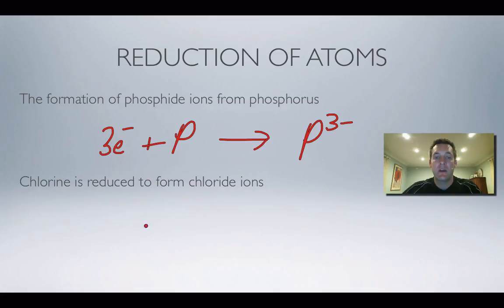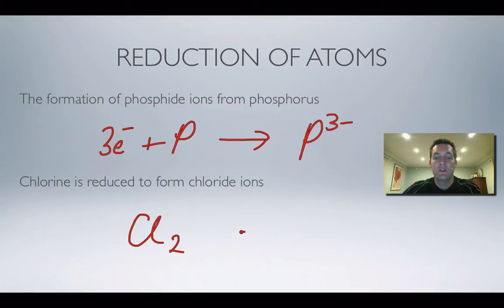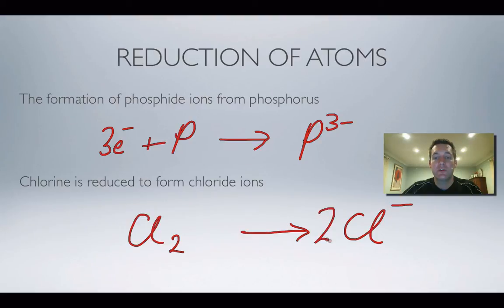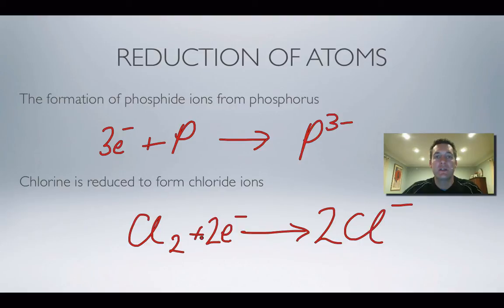Now chlorine being reduced to form chloride ions. Chlorine's reactant formula is Cl₂, not Cl. So Cl₂ forms two chloride ions — chloride is in group seven and gains one electron. With two chlorine atoms we form two chloride ions. This side is more positive, so the electrons go on the left; we need two electrons for the two negative charges. Electrons on the left because we're reducing.